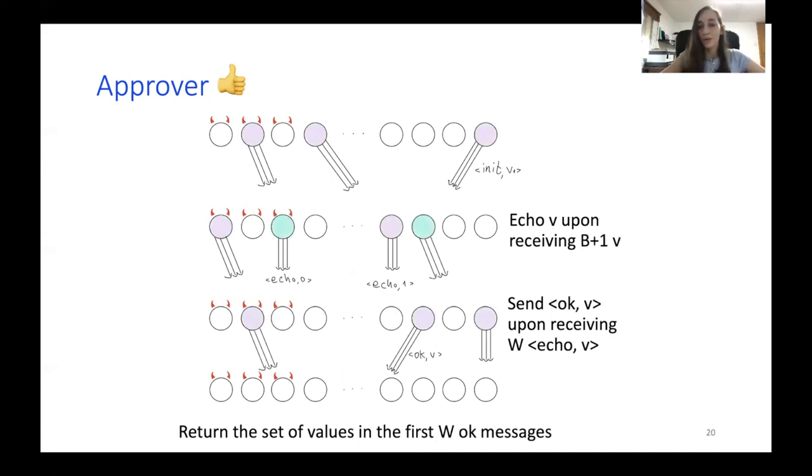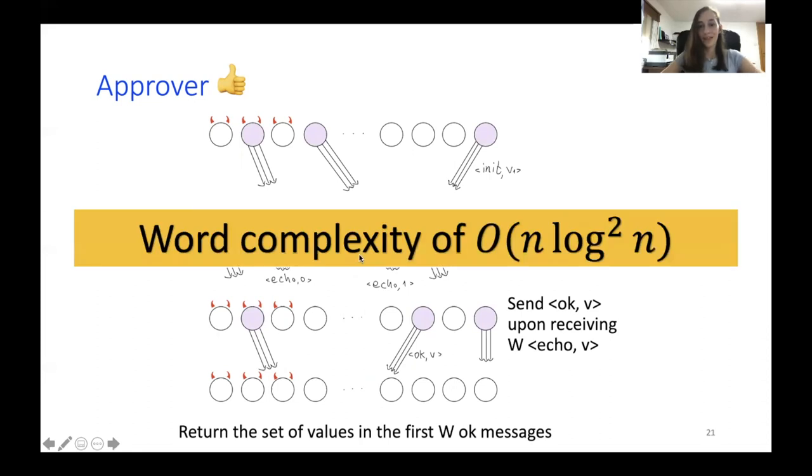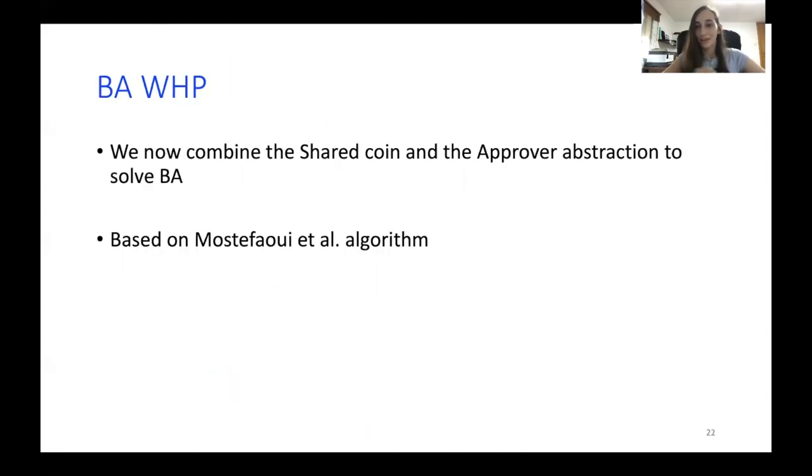So the way we solve it, we define two different committees, one for the first value and the other for the second. And as we said, there are at most two different values in approve. So there will be at most two different committees at the echo step of the algorithm. And the word complexity of this will conclude to O log squared n and will allow us to use it still in a subquadratic manner.